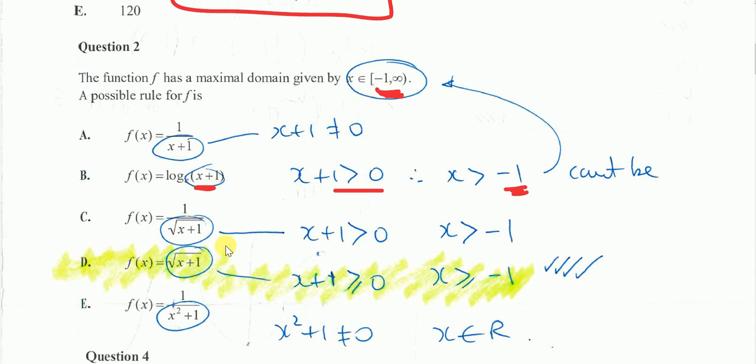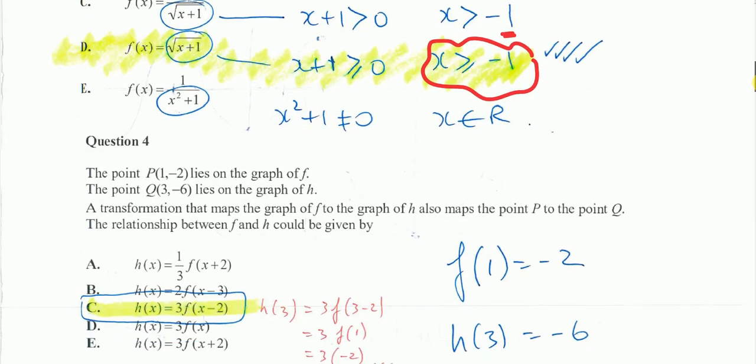In c's case, the bit underneath the square root's got to be bigger than zero, can't equal zero, so again, I can't equal negative one. In d's case, the bit under the square root's got to be greater than or equal to zero, so I like D. And in e's case, the bottom can be absolutely anything, because the denominator will never equal zero when x squared plus one, therefore that domain is all the numbers, so therefore D is my answer.